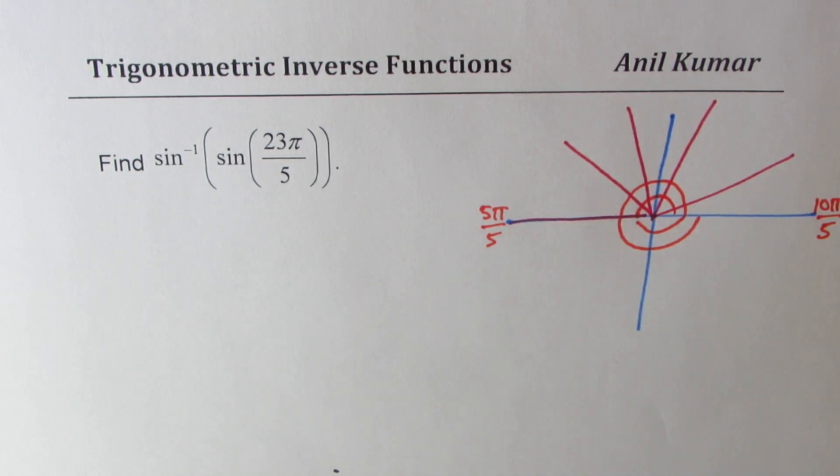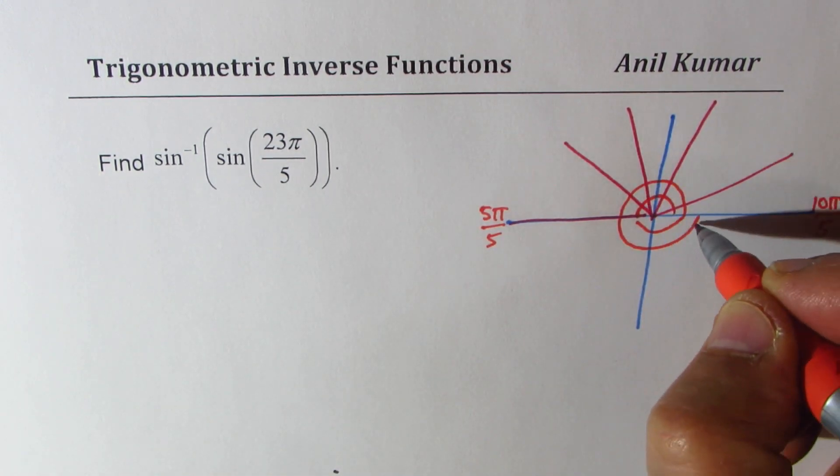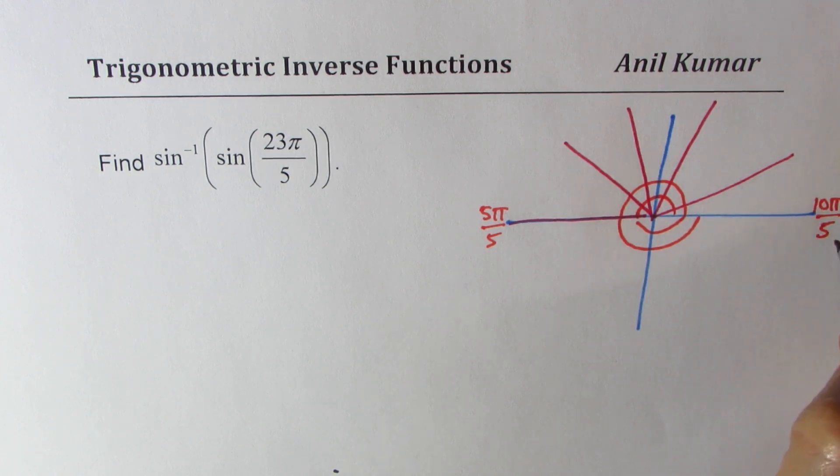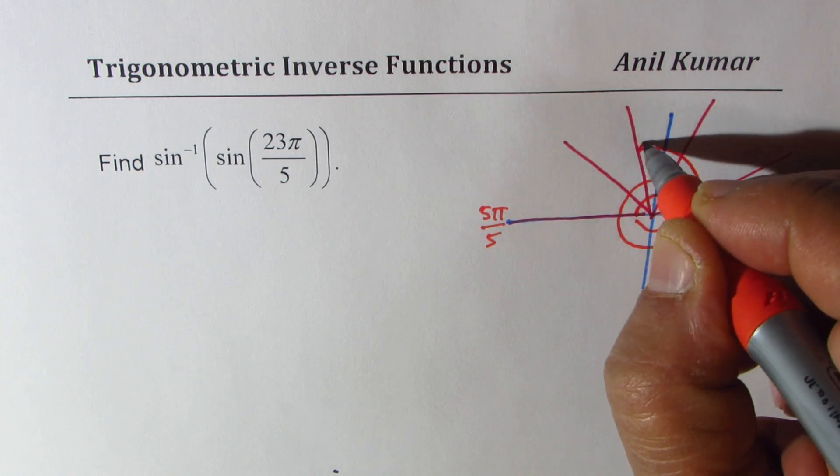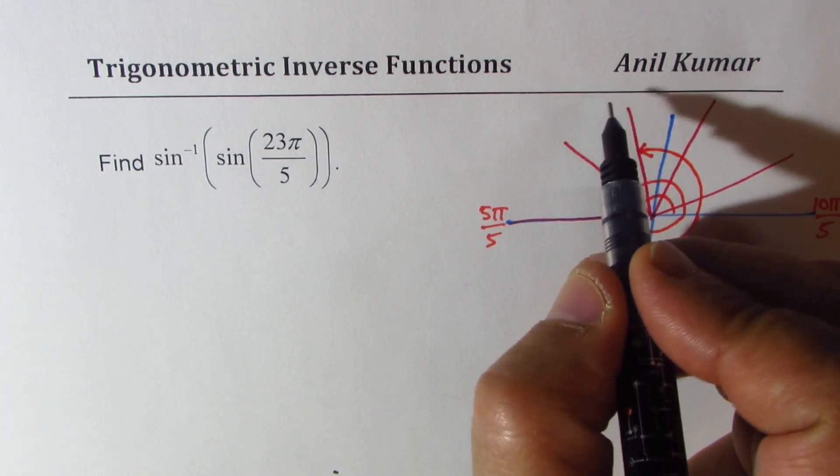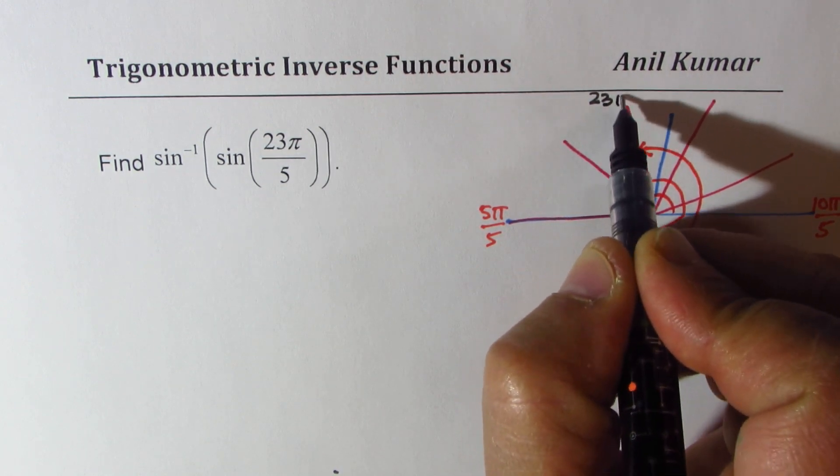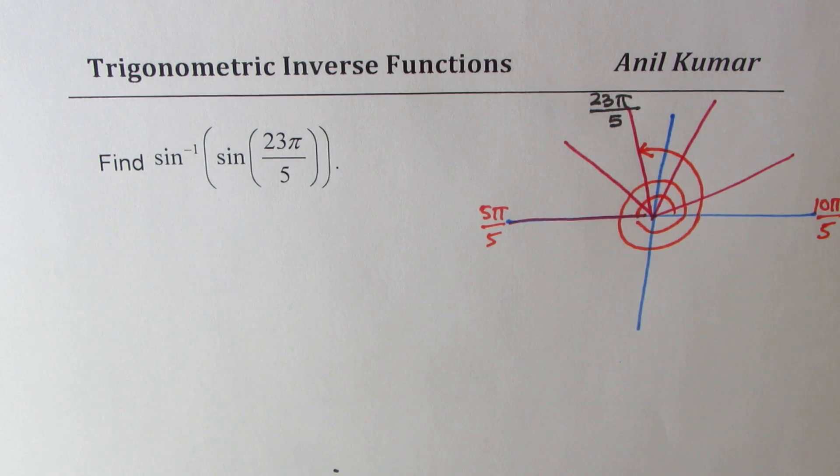So you notice that 23π by 5 is in quadrant 2. So that is 20, 2 circles, 1, 2, 3. So we land up here. So that is the position which is 23π by 5. We are in second quadrant.